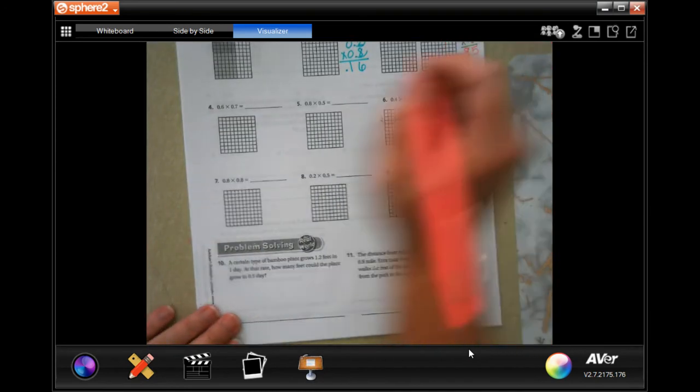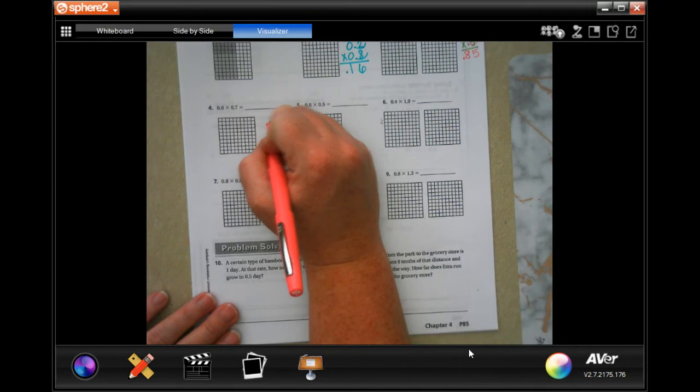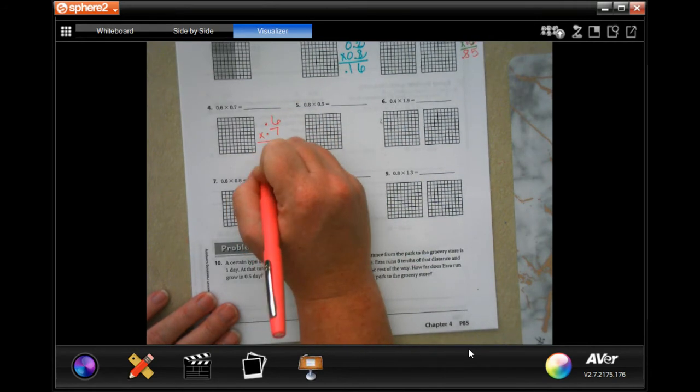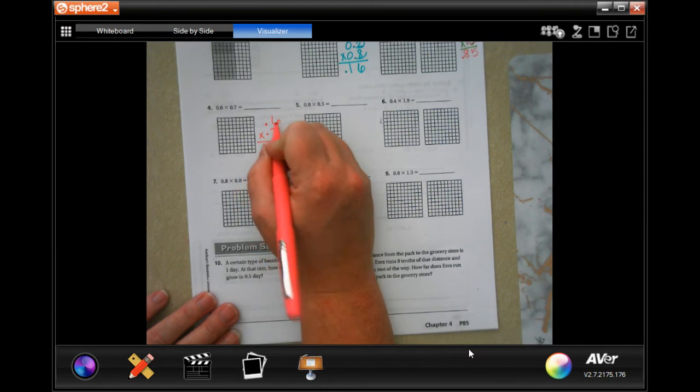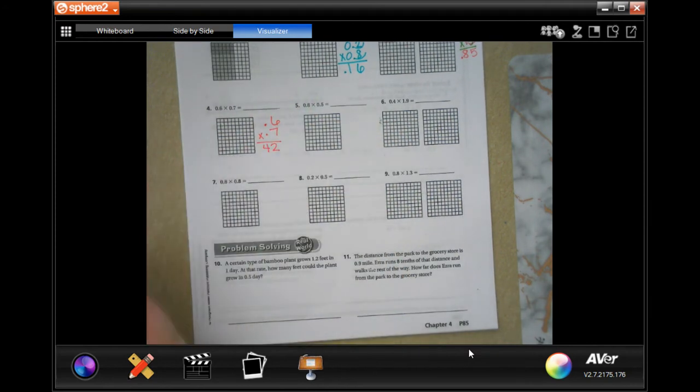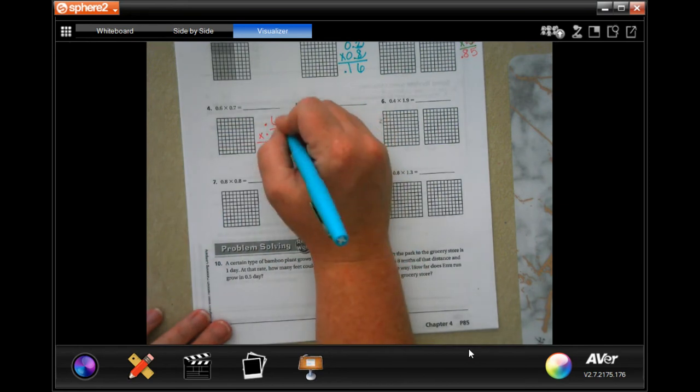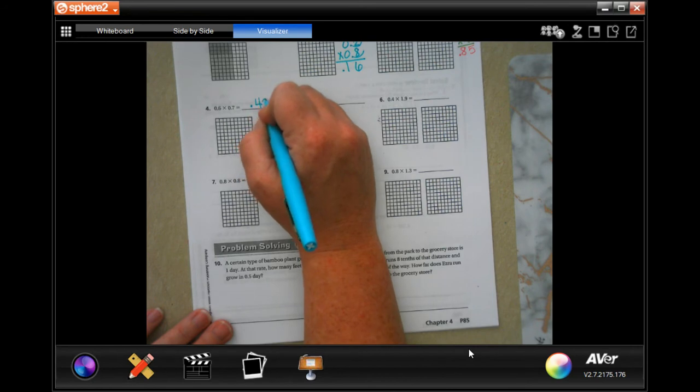One more. We're going to do 0.6 and 0.7. Multiply those. I'm going to get 42. 7 times 6 is 42. Now, I went in 1, 2 times. So, 1, 2 right there, 0.42.